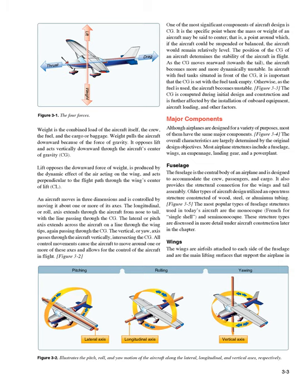Major Components. Although airplanes are designed for a variety of purposes, most of them have the same major components. The overall characteristics are largely determined by the original design objectives. Most airplane structures include a fuselage, wings, an empennage, landing gear, and a powerplant.